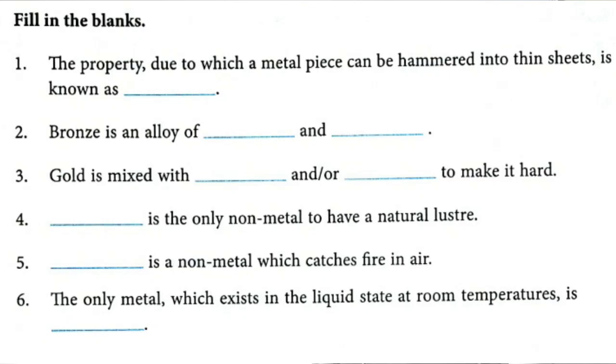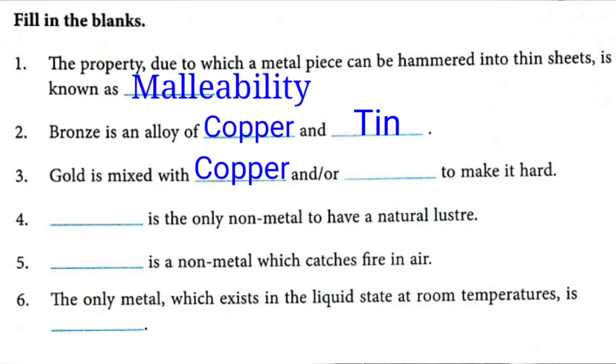First, the property due to which a metal piece can be hammered into thin sheets is known as malleability. Second, bronze is an alloy of copper and tin. Third, gold is mixed with copper and or silver to make it hard.